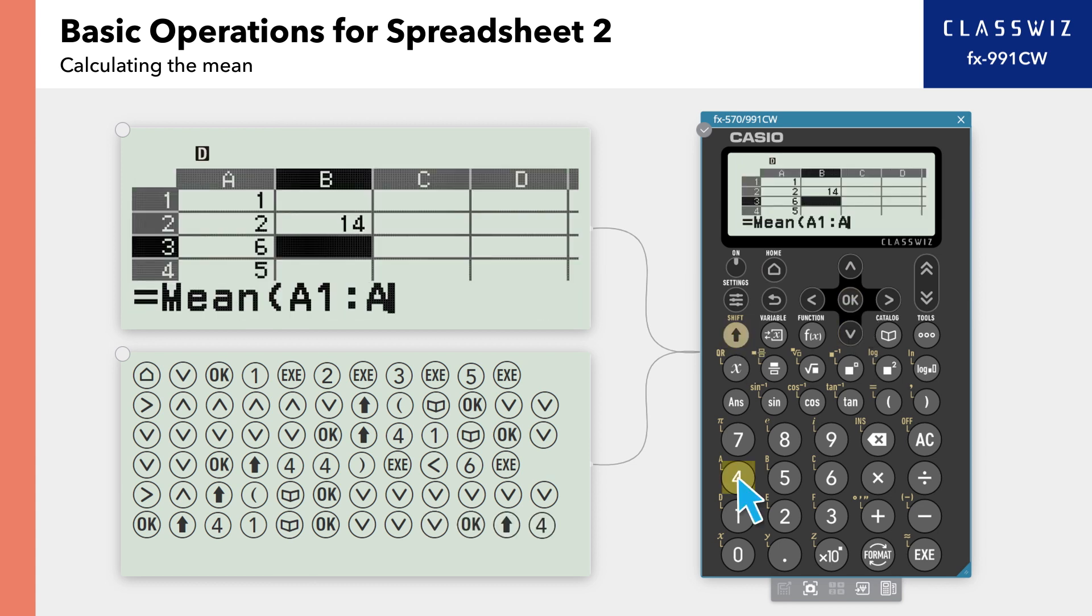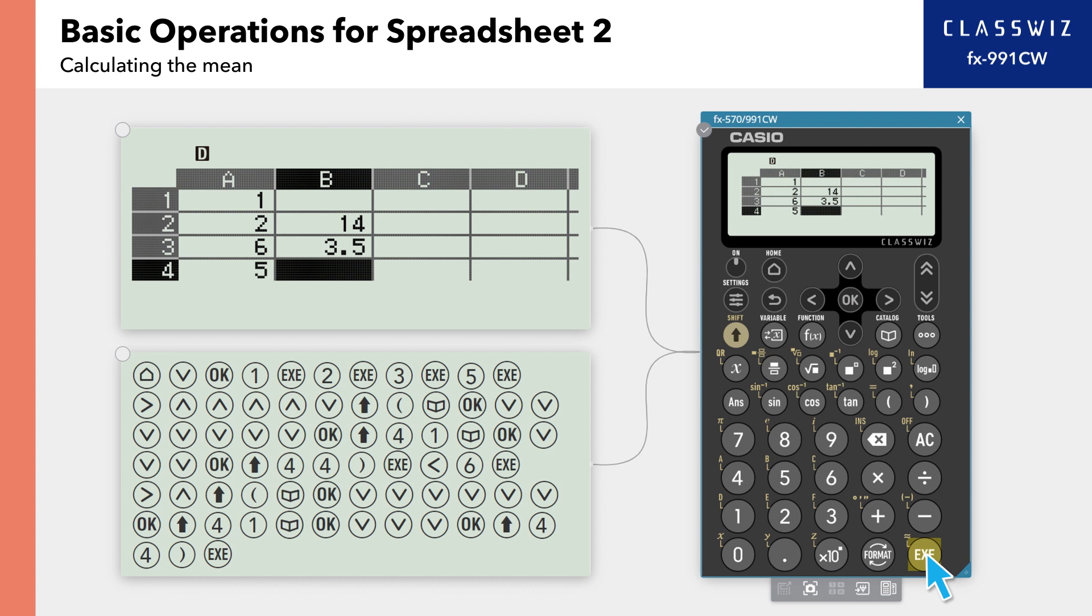Now, enter A4 closing parenthesis. Finally, press Execute to show the average value of cells A1 through A4 in cell B3.